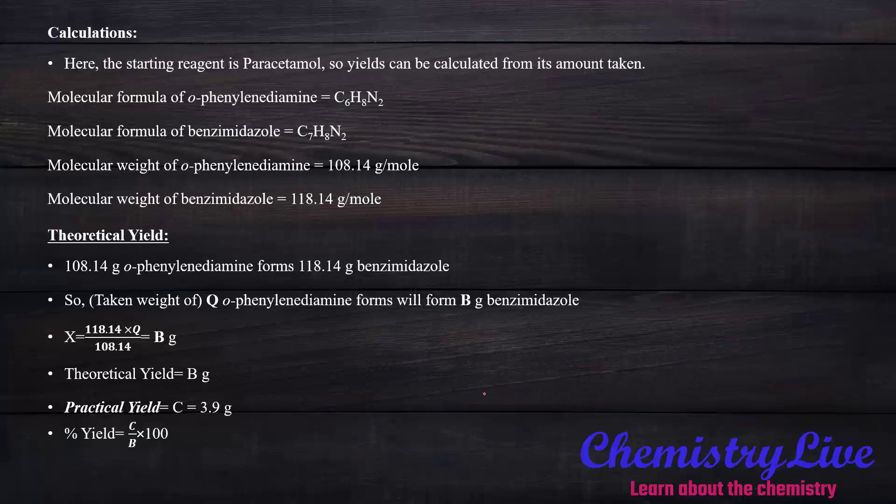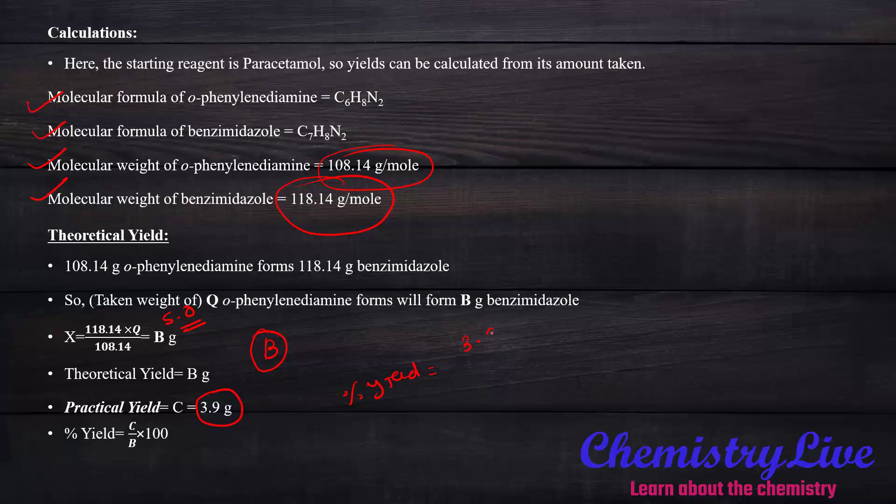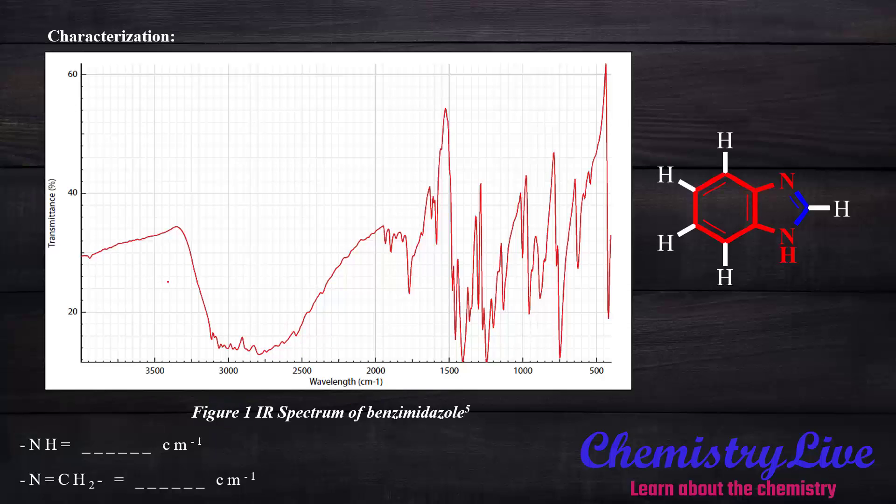Next is the calculation. The calculation has molecular formula of starting and the product, molecular weight of starting and the product. So we can say if we have 108 gram per mole orthophenylenediamine we will get 118.14 gram per mole benzimidazole. So what about 5 grams? We did the calculation and we will get result B. The practical yield is 3.9 grams. To find out percentage yield we have to do 3.9 divided by B into 100. We will get percentage yield. The next section is characterization which deals with IR, NMR, and mass.